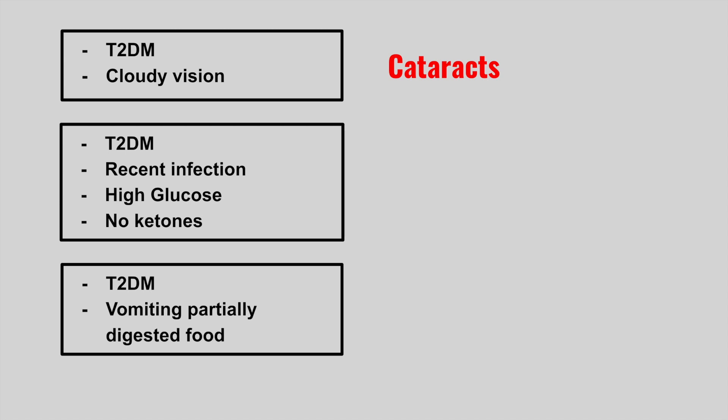The next patient is a type 2 diabetic that has a recent infection and now has high glucose levels but no ketones. This is hyperosmolar hyperglycemic state (HHS), which is kind of like the DKA of type 2 diabetes.